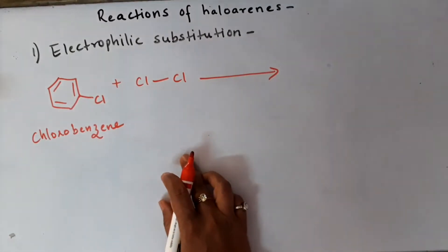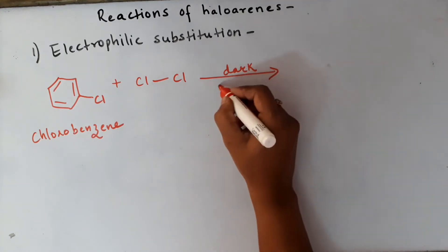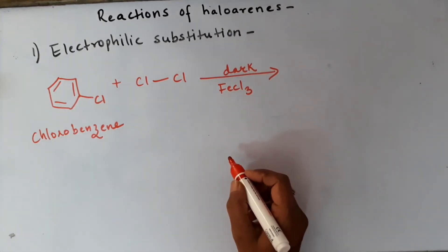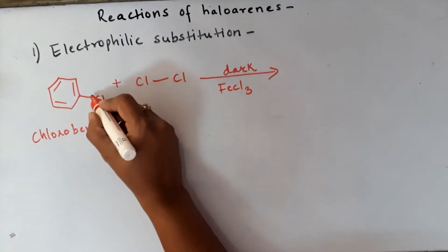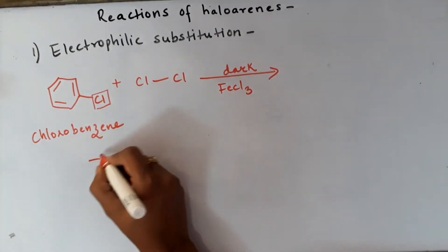This reaction is going to take place in dark because in light we have free radical halogenation. The catalyst used here is FeCl3. Now the nature of chlorine is that it is an electron donating group via resonance.